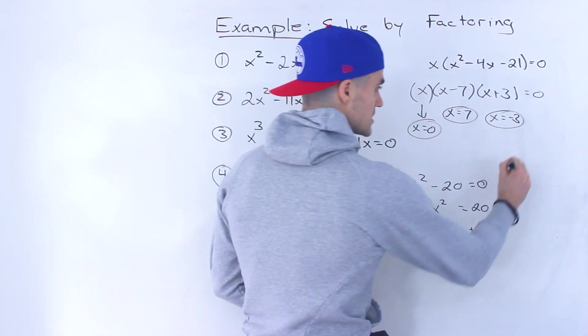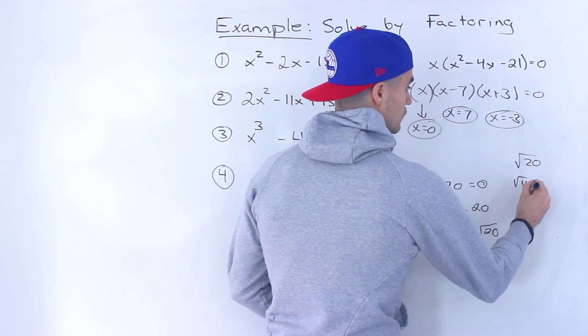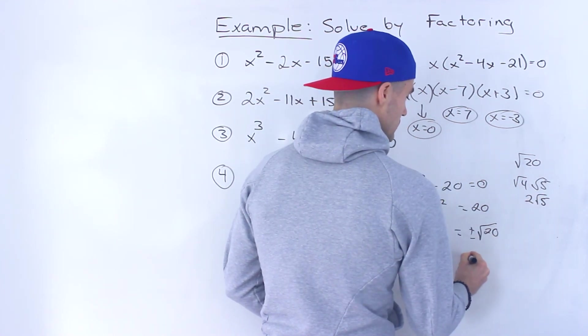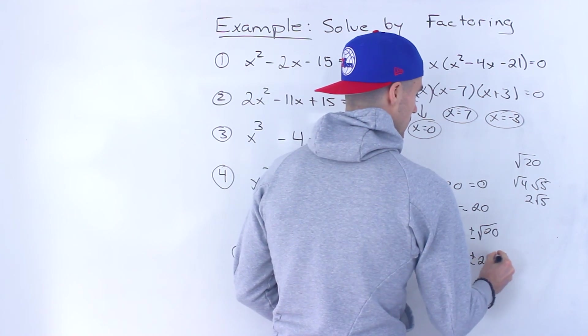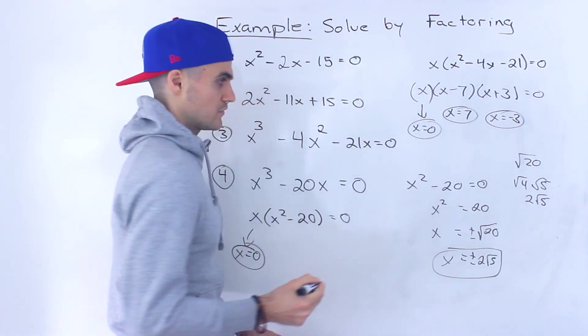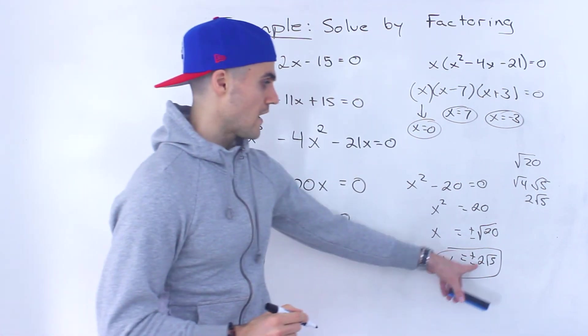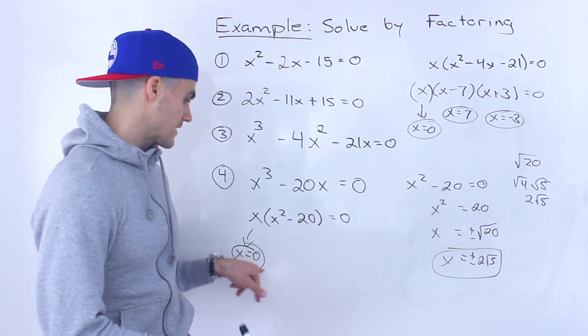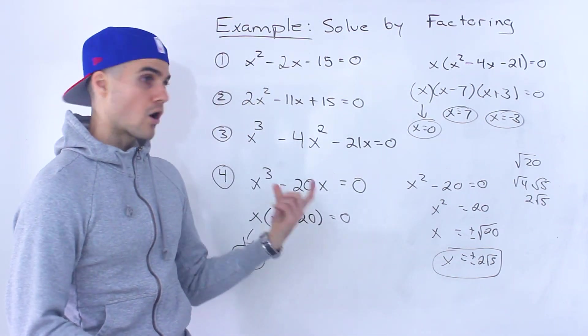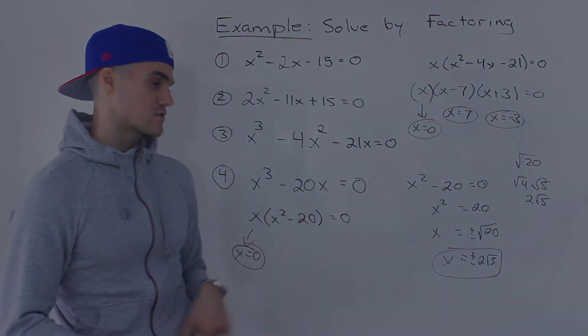And then you can actually simplify this radical into √4 × √5, which would be 2√5. So that's another way to write this solution, the more simplified way. 2√5 and √20 are the exact same thing. So x = 0 and ±2√5 are the solutions to this equation.